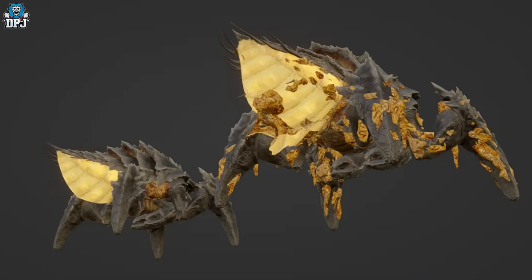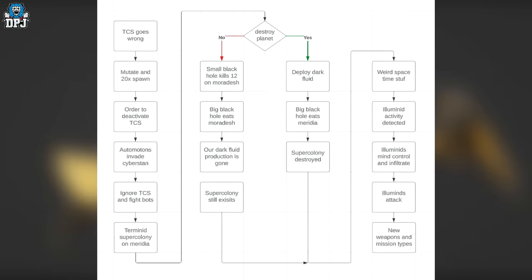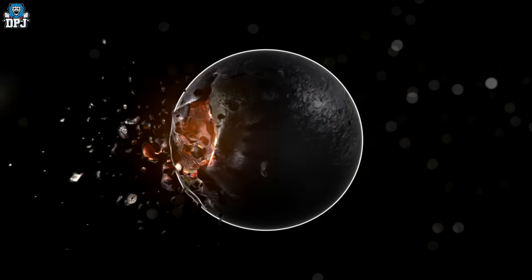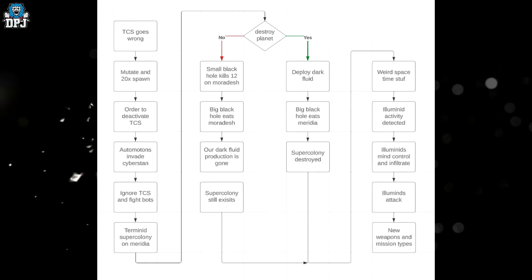Going back to that lore timeline, we can see there's two different pathways here, both resulting in the destruction of a planet, either Moradesh if we fail I guess and Meridia if we don't. I say win or fail, we don't actually know yet. There could be another choice somewhere we may have to pick. But we can see where it says destroy planet, which is very interesting too, because we got a brand new exploding planet render put together by IronSight, which you're seeing on screen now. This kind of looks like a planet being sucked in on itself, does it not? Maybe to do with that black hole, we do not know.